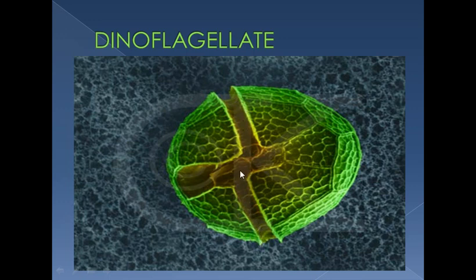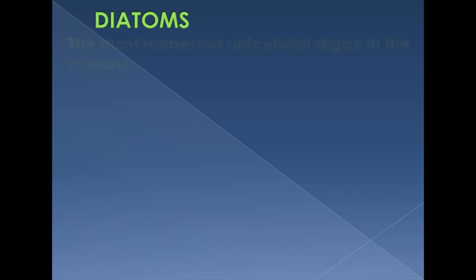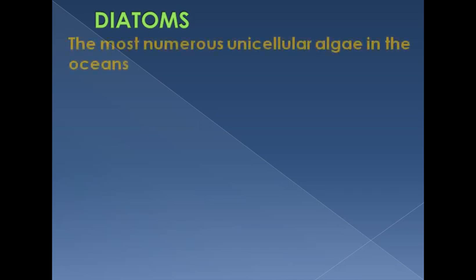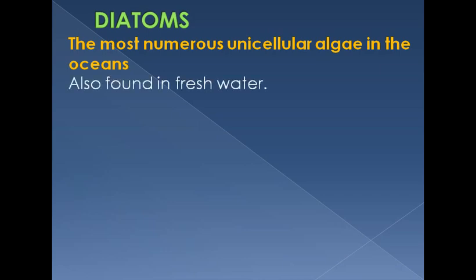Dinoflagellates are called so because they have two flagella — one found in a ring-like girdle and the other longitudinal. They are also photosynthetic. Diatoms are the most numerous unicellular algae in the oceans — remember this for MCQs. They are also found in freshwater.